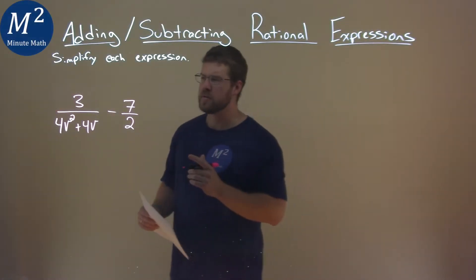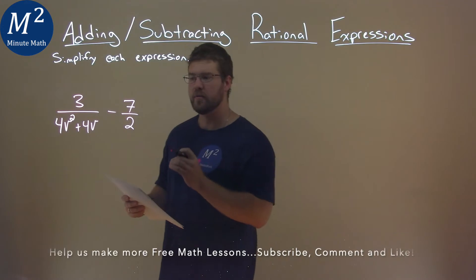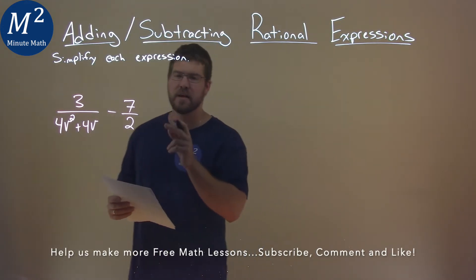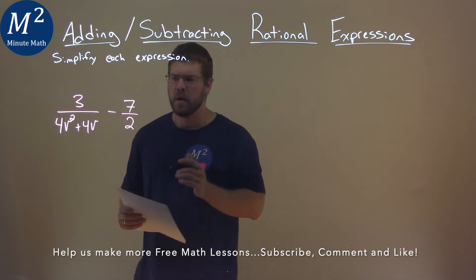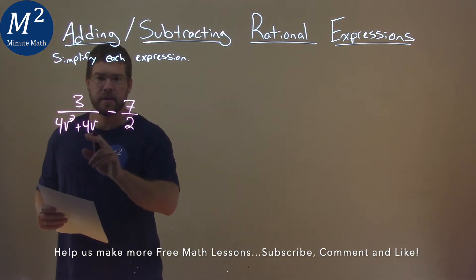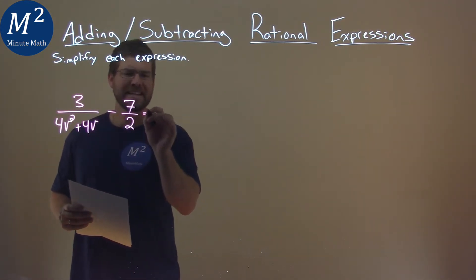We're given this expression right here: 3 over 4v² plus 4v, minus 7 over 2. We have to simplify this expression. We do not have the same denominator here for both parts, so we need to get that.